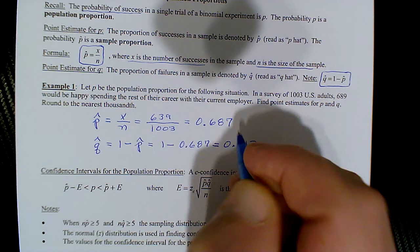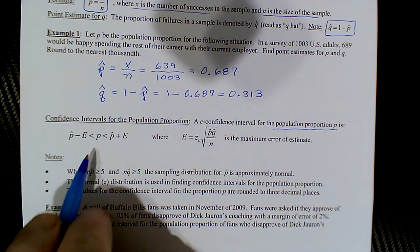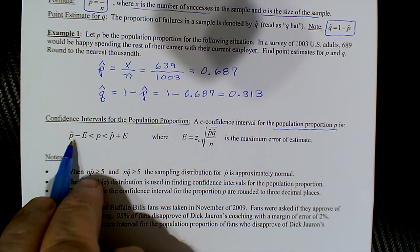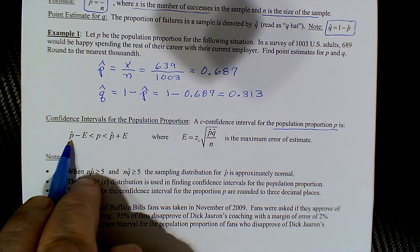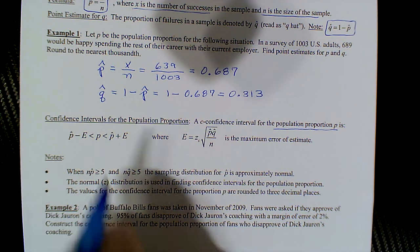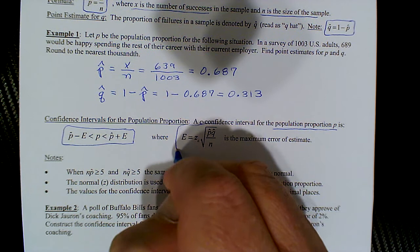The formula for estimating the population proportion p is similar to estimating the population mean mu. Instead of mu, we have p nested between the endpoints; instead of x-bar, we use p-hat. The left endpoint is p-hat minus the margin of error, and the right endpoint is p-hat plus the margin of error. There is also a new formula for the margin of error.